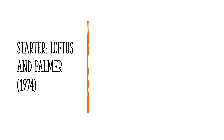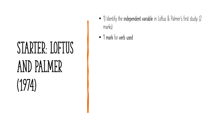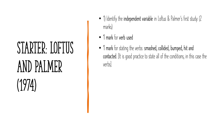Question one: identify the independent variable in Loftus and Palmer's first study for two marks. One mark is awarded for saying the independent variable — the thing they changed — was the verb used in the leading question. An extra mark is for stating the verbs: smash, collided, bumped, hit, and contacted. It's always good practice to state all conditions; it shows the examiner you know the study in detail.